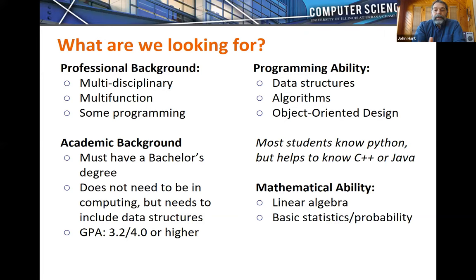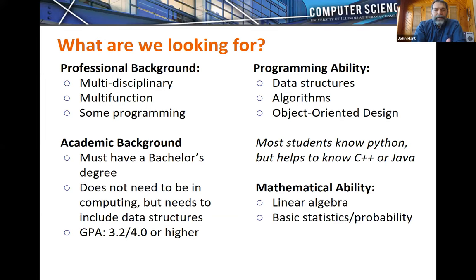If your final GPA for your bachelor's degree is below 3.2, please be aware that we'll look at these other GPA metrics during evaluation. There may be cases where someone is admitted with a bachelor's GPA under 3.2 because of this holistic approach — we look at GPA under various metrics and there may be other criteria that factor in.